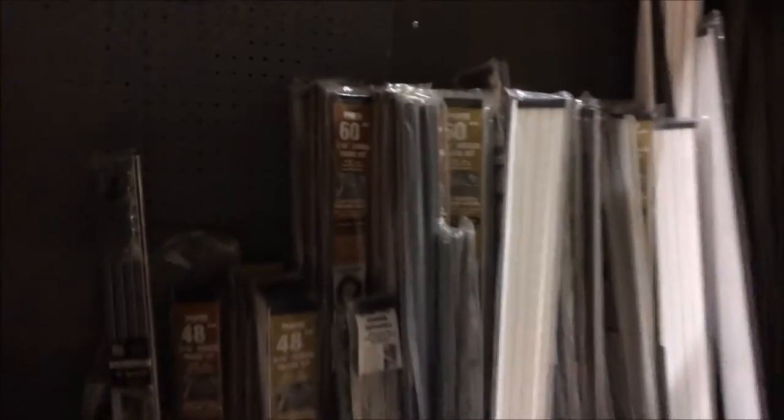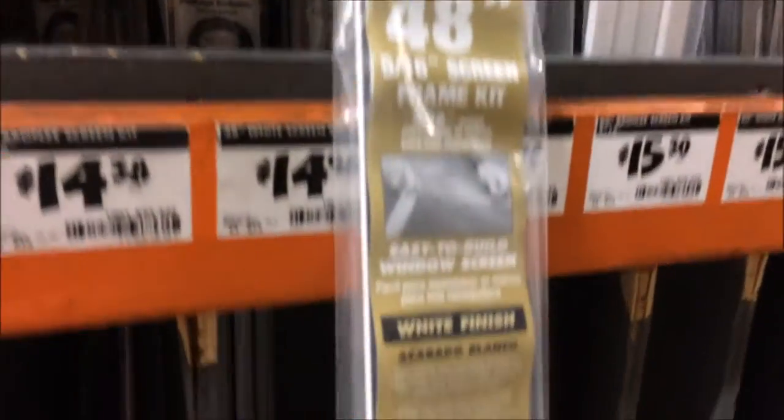When making smaller screens, the kits work okay. These typically come with four lengths of window screen framing, a spline, and four plastic corner pieces.